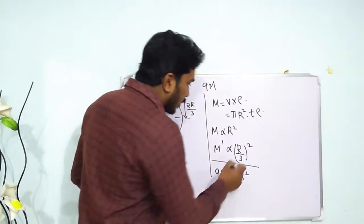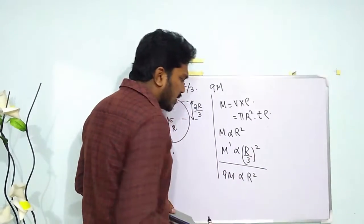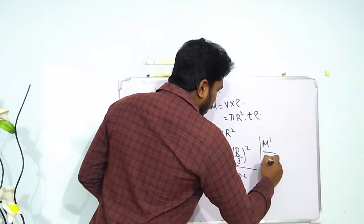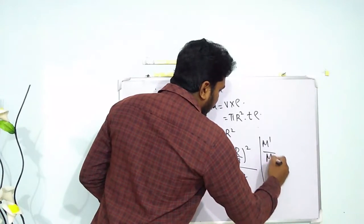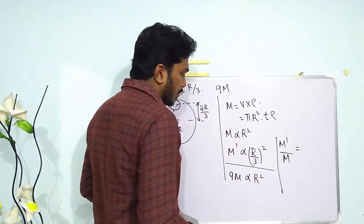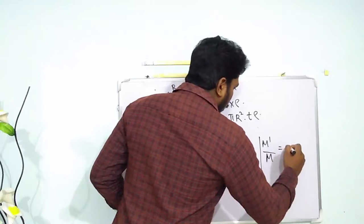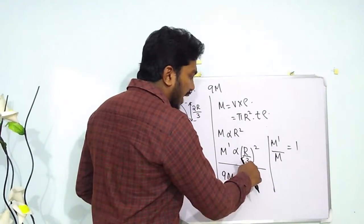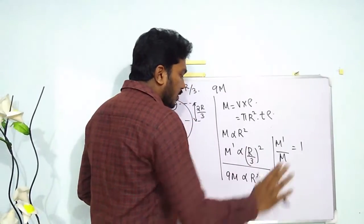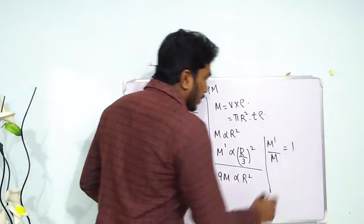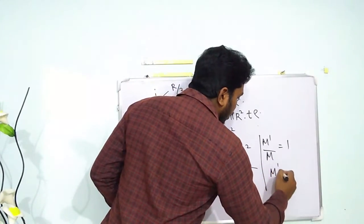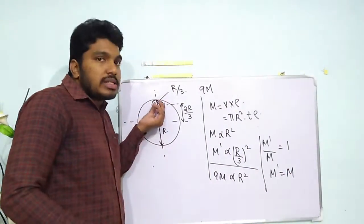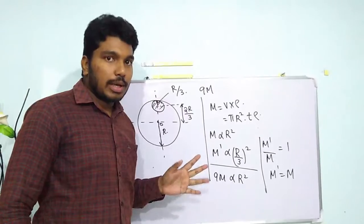Taking the ratio: r² and r² cancel out, so m'/9m = (r/3)²/r² = 1/9. Therefore m' = m. So the mass of the removed disk is m.